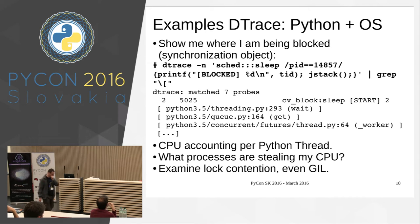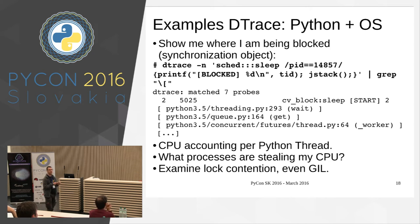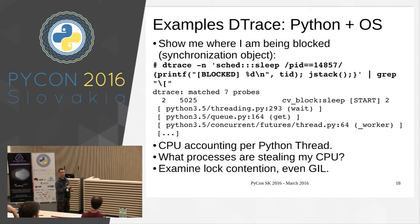A problem I had once was that I had a lot of threads being blocked from time to time, and I didn't know why — whether they were deadlocked or waiting for something. There's a provider called the scheduler sleep. This provider fires when your thread is going to sleep because it's waiting for something to happen. Activating this probe for a specific process shows me the thread ID and the stack of that particular thread. I can see, for example, a thread waiting in a queue for more work to come — something you normally don't have access to from regular Python.